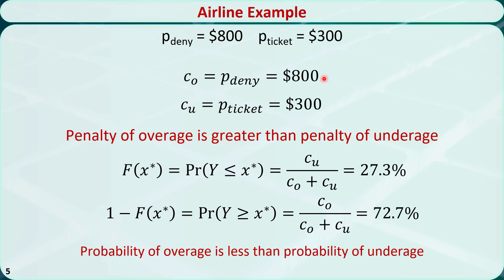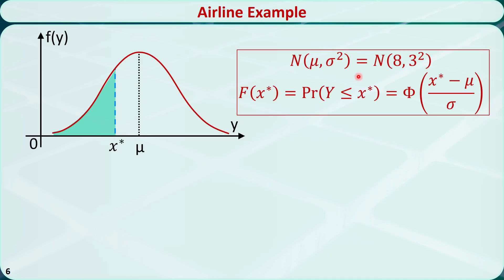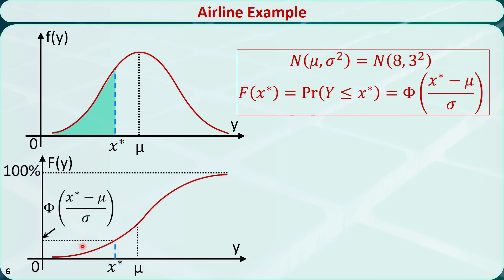The reasoning is that because the overage cost or penalty is greater than the underage cost or penalty, we need to determine the overbooking quantity X* so that the airline will have a lower probability of overage than underage. The demand Y follows the normal distribution. This figure shows the probability density function of a general normal distribution with mean mu and standard deviation sigma. The overage probability equals the area represented by the shaded region. We can convert it to the standard normal cumulative distribution: it equals phi of (X* minus mu) over sigma. The overage probability is equal to 27.2%, giving us this equation.